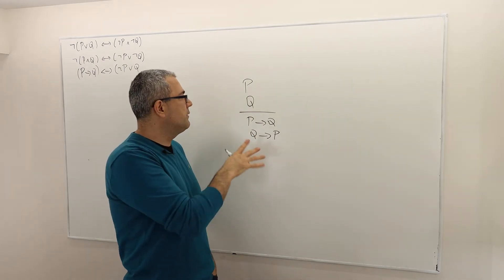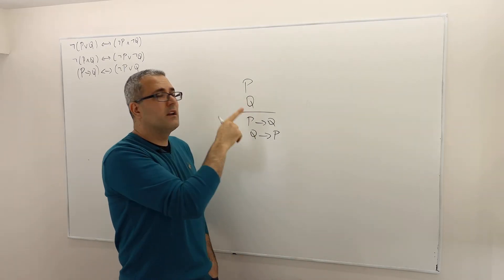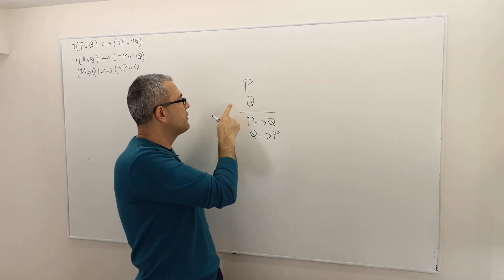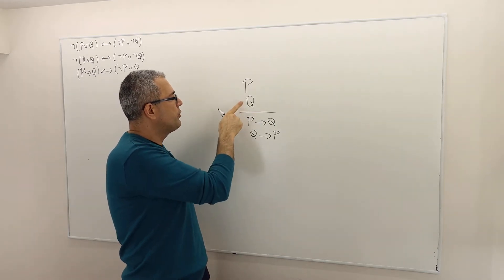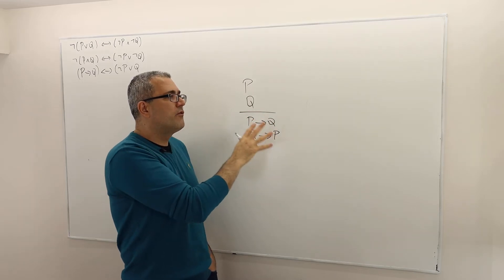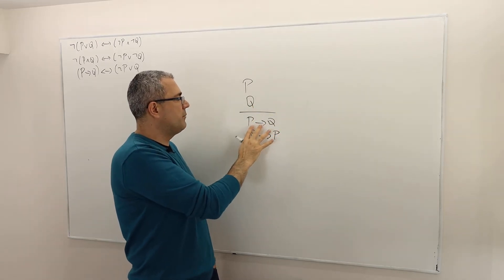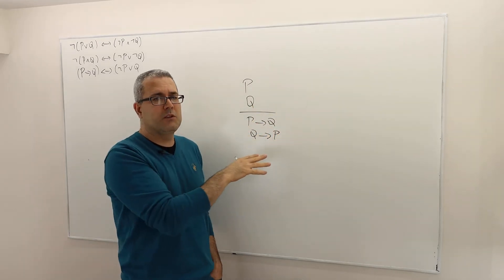All right, so in the last example in section eight of propositional logic, I said P is true, Q is true.